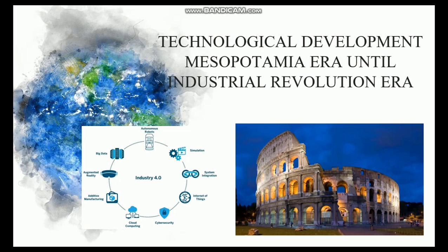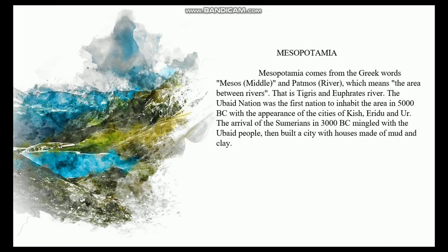Technological Development: Mesopotamia Era and the Industrial Revolution Era. Mesopotamia comes from the Greek words 'Mesos' meaning Middle and 'Patmos' meaning River, which means the area between rivers — that is the Tigris and Euphrates River. The Ubaid nation was the first to inhabit the area in 5000 BC, with the appearance of the cities of Kyush, Aridu, and Ur. The arrival of the Sumerians in 3000 BC mingled with the Ubaid people and built a city with houses made of mud and clay.